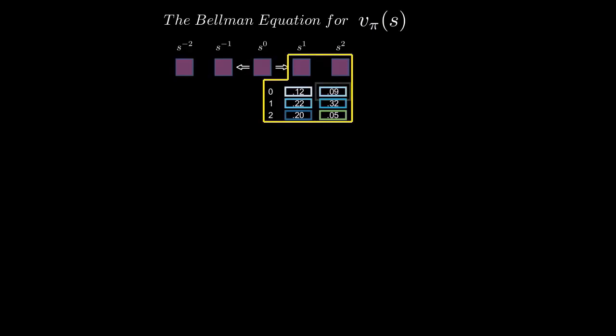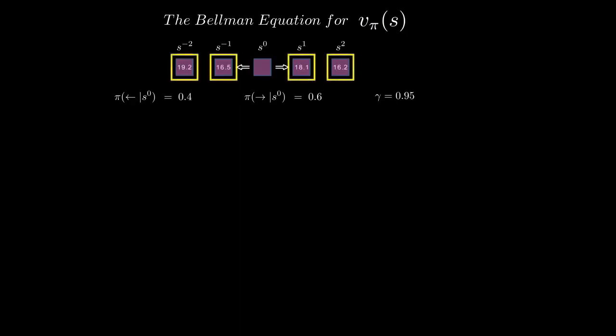As you'd expect, something similar is true for selecting left. Next, the policy from this state is a 40% chance of choosing left and a 60% chance of choosing right. And the discount factor is 0.95. Now here's the question. If I also tell you the state values of the possible next states, can you determine the value at state s_0? Yes, it's determined by the Bellman equation. To discover it ourselves, we can start with the definition of what we're trying to calculate.